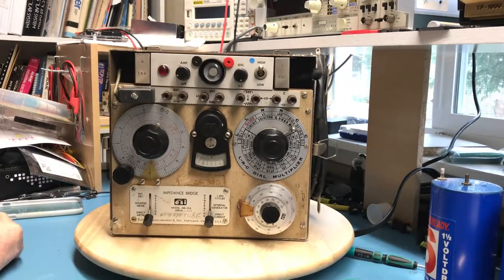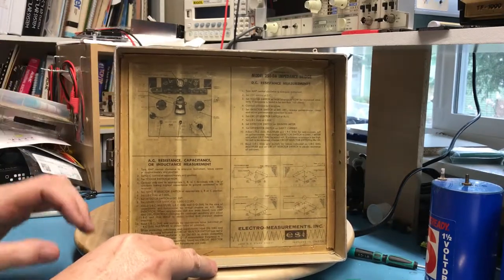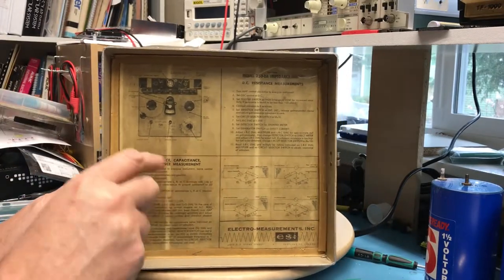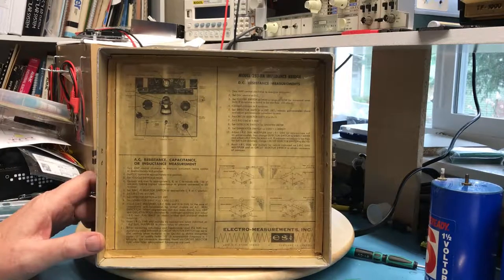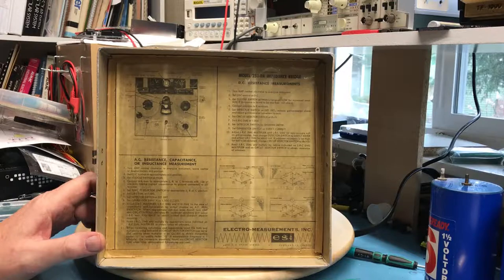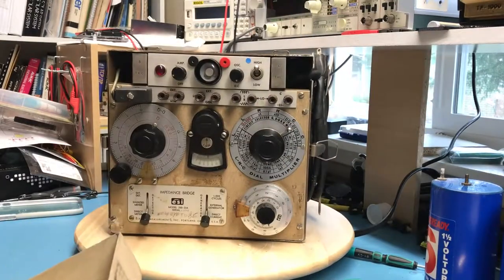And in the lid, although it's very yellowed, I hope that's going to show up on camera - AC resistance, capacitance, or inductance measurement, DC resistance measurements. So I thought maybe I'd plug it in, give it a spin, and we'll see what we can do with it.